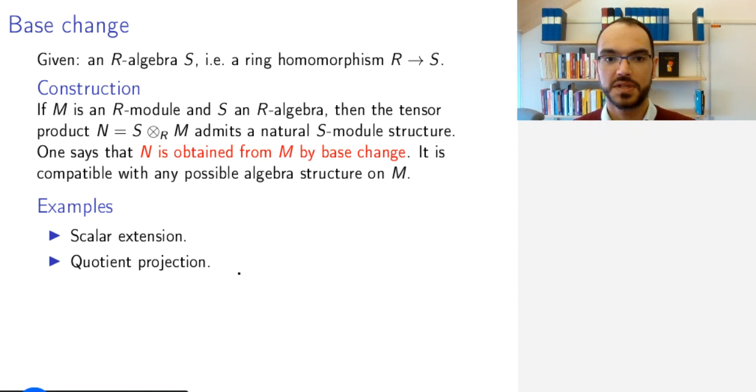I can do this scalar extension for rings, not just for fields. If S equals R modulo some ideal J, then I can extend. I have M, and from it I construct R/J ⊗_R M. This basically means that I kill the action of J on M.